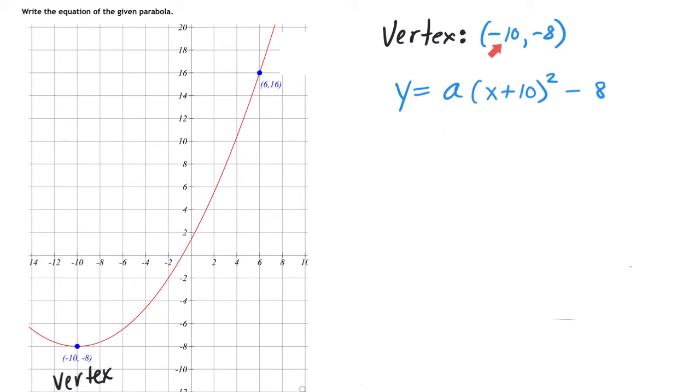We have to do the opposite of whatever the x value is in the actual vertex. So if it's negative 10 here, I wrote x plus 10, and then I kept the y part of the vertex the same in the equation as well.